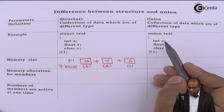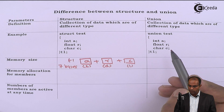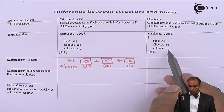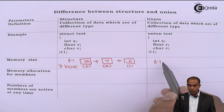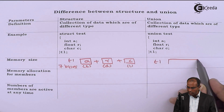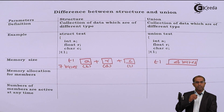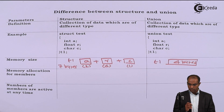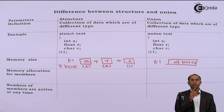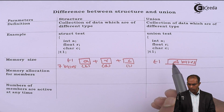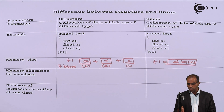When it comes to a union, the size of a union variable is always equal to the size of the member which occupies maximum size. So here: A has 2 bytes, R has 4 bytes, C has 1 byte. The maximum is 4 bytes, so the union T1 will have a size of 4 bytes. Structure is 7 bytes; union is 4 bytes.